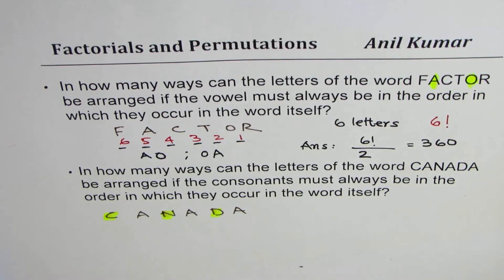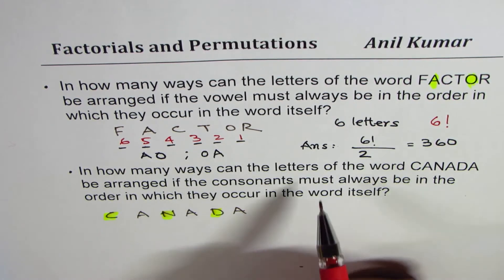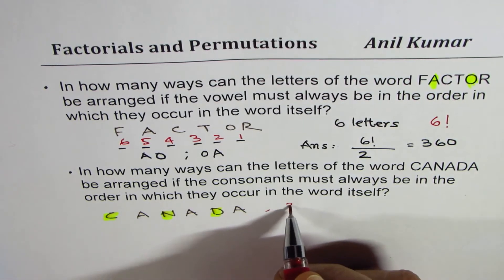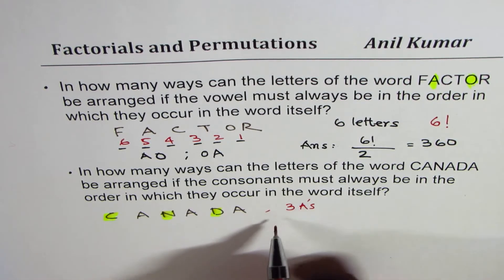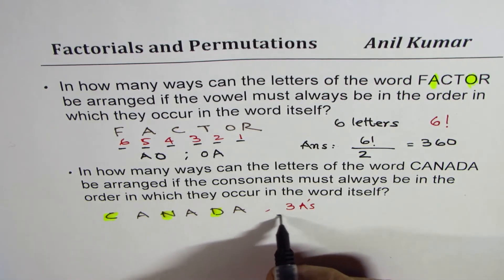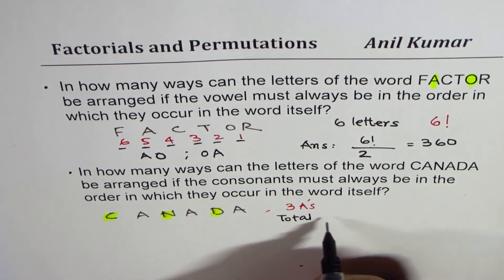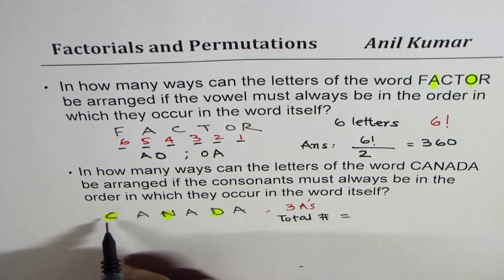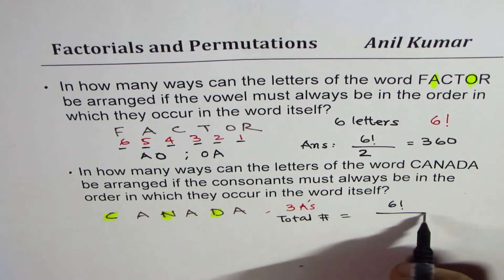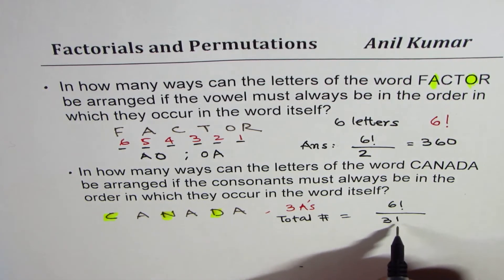Now, in this case, if we follow the method which we did earlier, A's are repeated. So what we have here, we have 3 A's. Since we have 3 A's, total number of ways are 1, 2, 3, 4, 5, 6, which is 6 factorial, divided by 3 A's, that is 3 factorial.